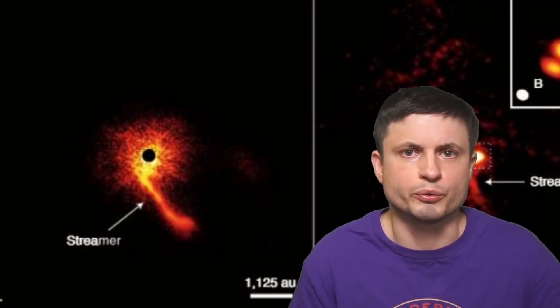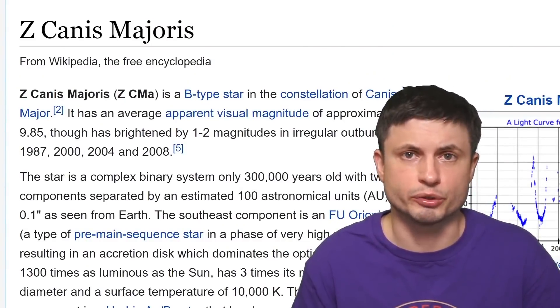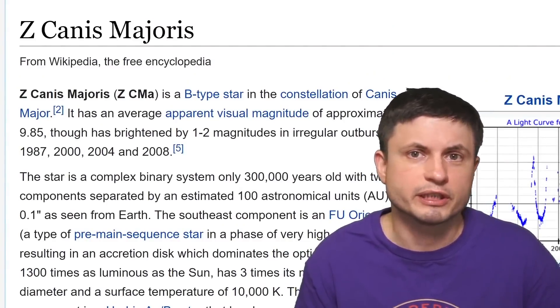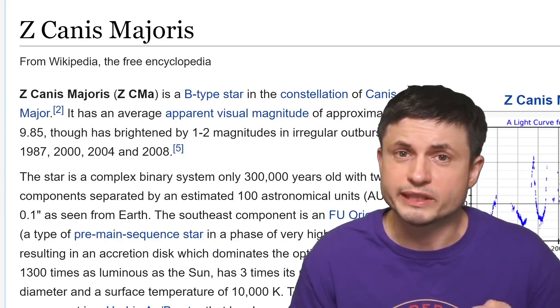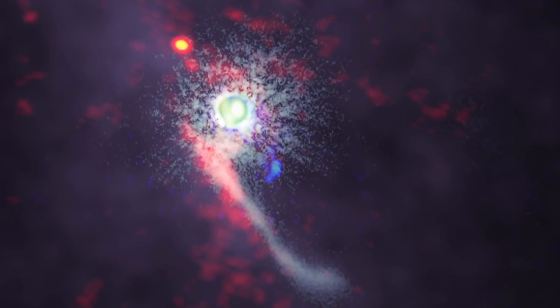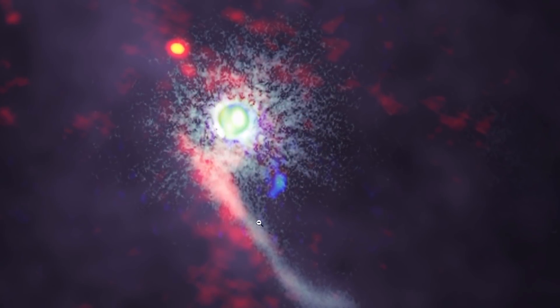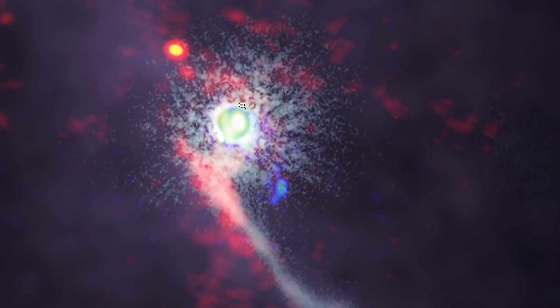But some of the observations from ALMA have also discovered these unusual protoplanetary disks that seem to possess various stretched structures. Today they are usually referred to as streamers. And at least one such star is this one right here known as Z Canis Majoris. It's located around 3,700 light years away from us and it's a relatively young star. It's probably around 300,000 years old.